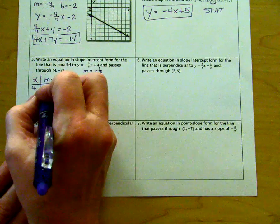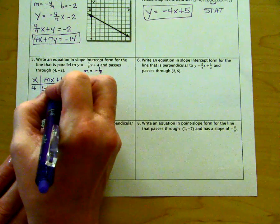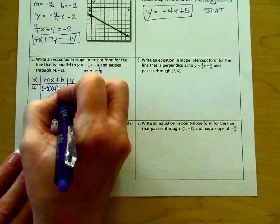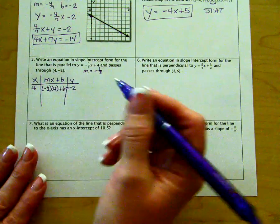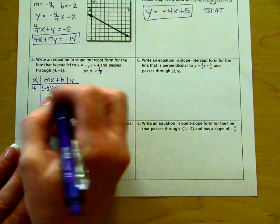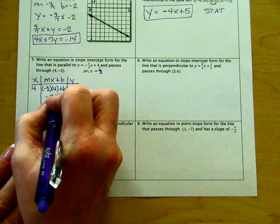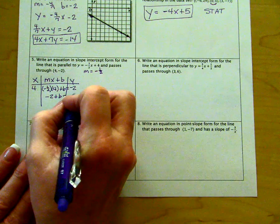Our slope is negative one-half. We're going to multiply that by the x value we have and solve for b. Half of four is two, so this is going to be negative two plus b equals negative two.